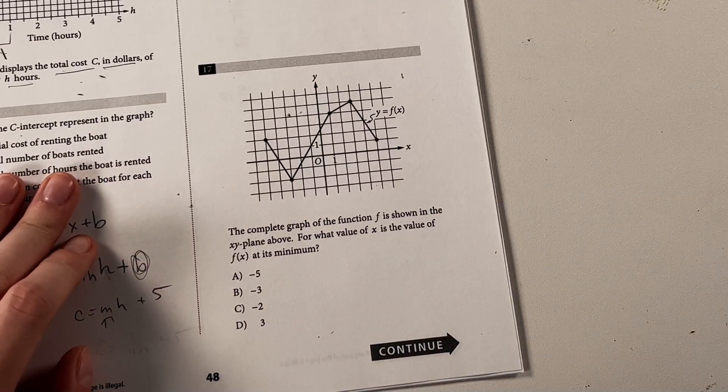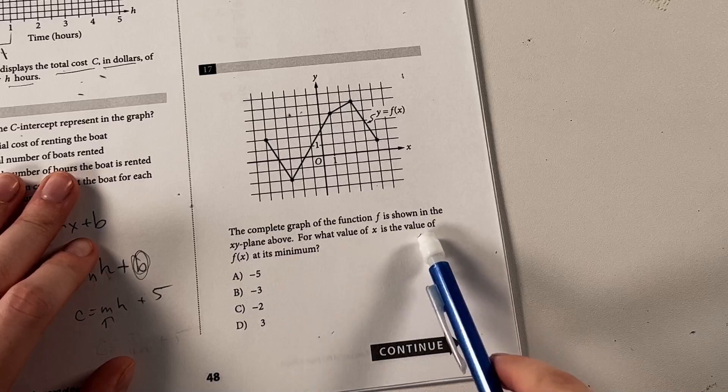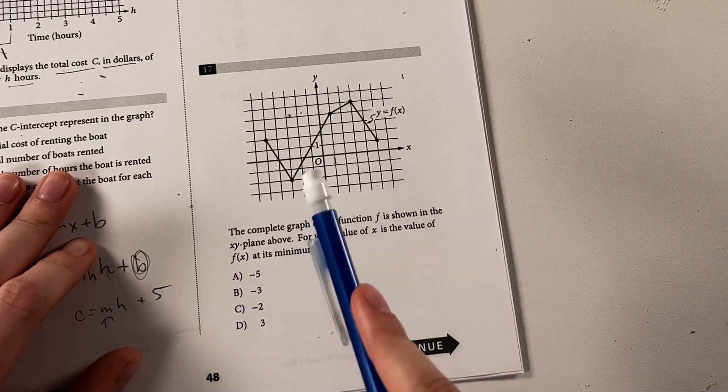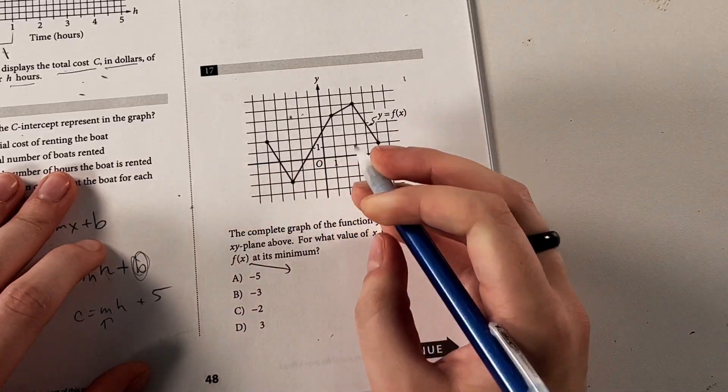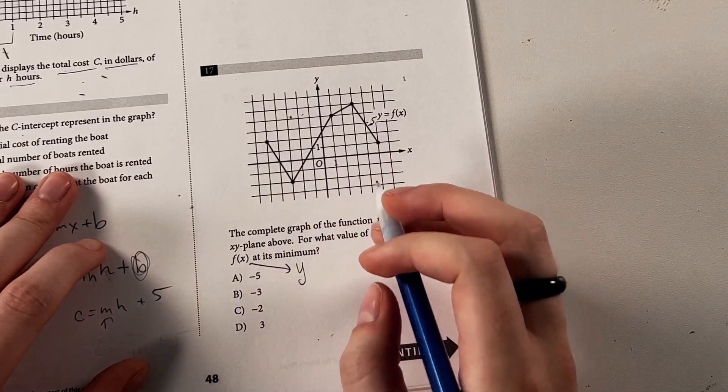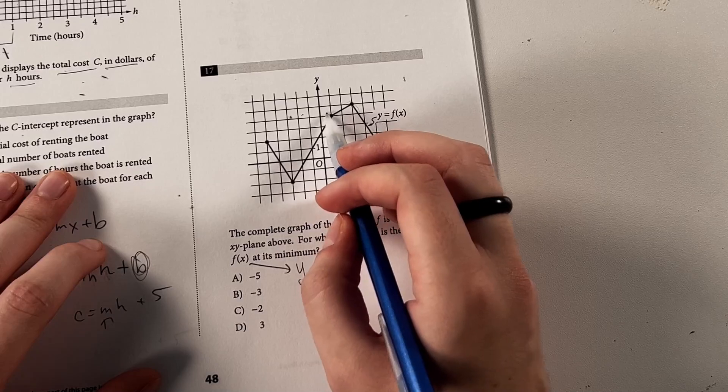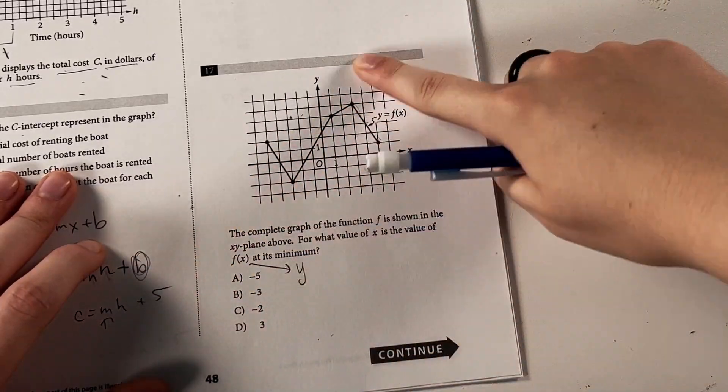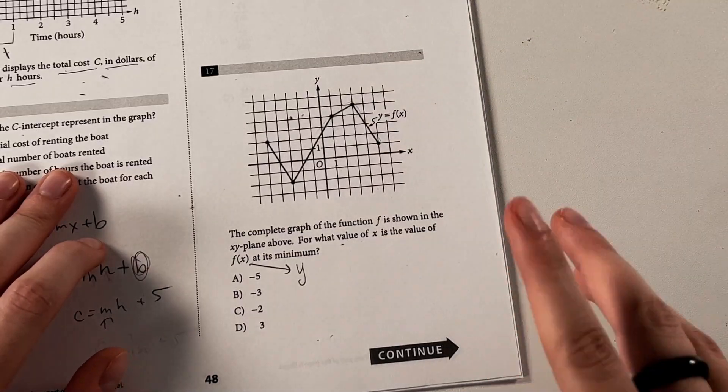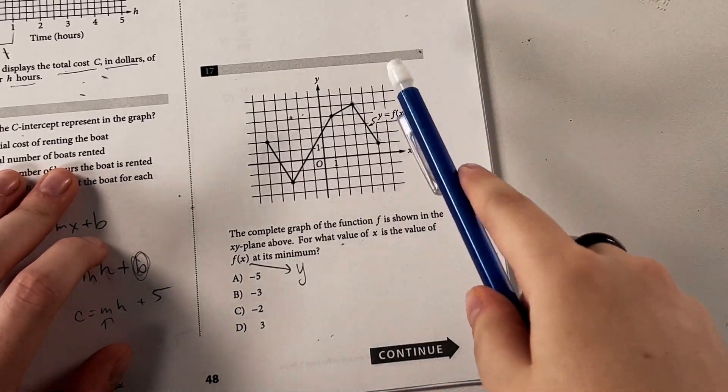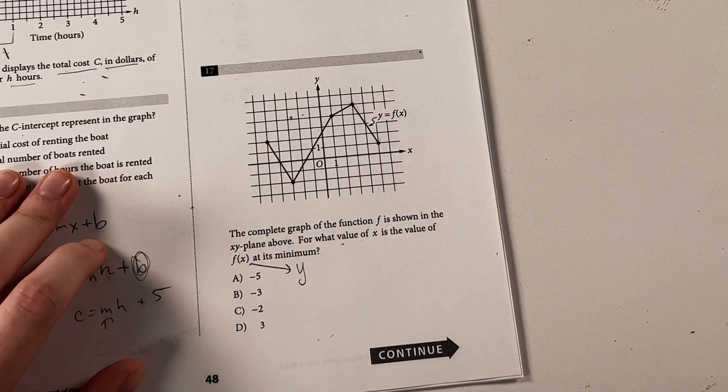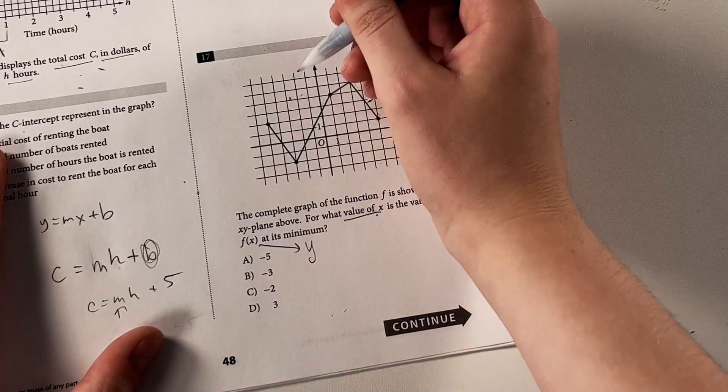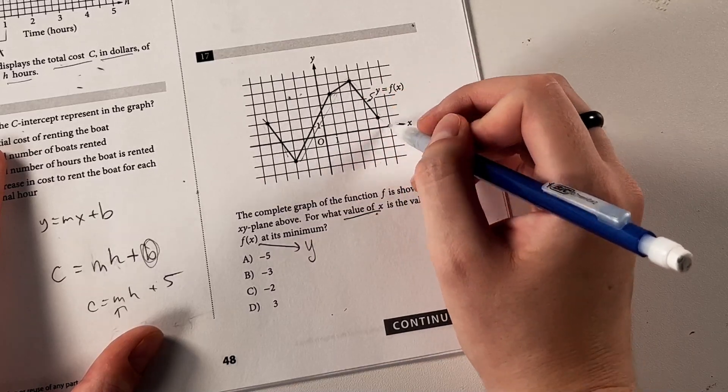So now we have a function question. So the complete graph of the function f is shown in the xy plane above. For what value of x is the value of f of x at its minimum? So remember, functions are kind of just a fancier way of saying y. Functions allow us to draw this entire weird, kind of piecewise function here instead of just having a linear graph or an exponential or quadratic or something. But don't pay too much attention to the function notation. It gets a little confusing.